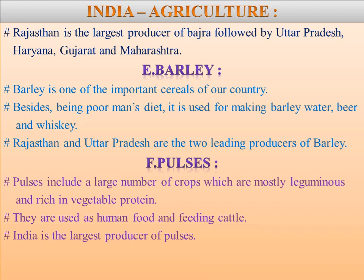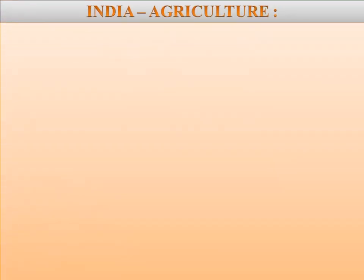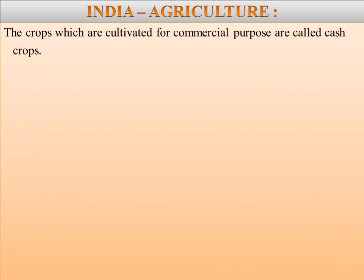Next we are going to learn about cash crops. Cash crops are those which are cultivated for commercial purposes. These crops include sugarcane, tobacco, fiber crops, cotton, jute, and oilseeds.